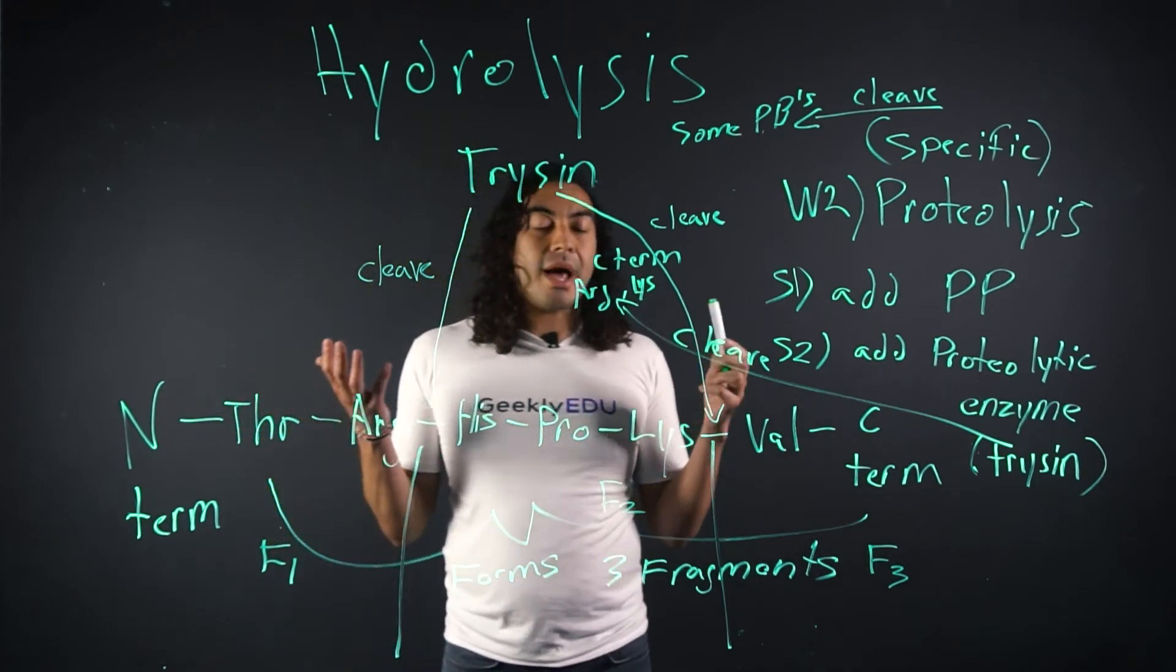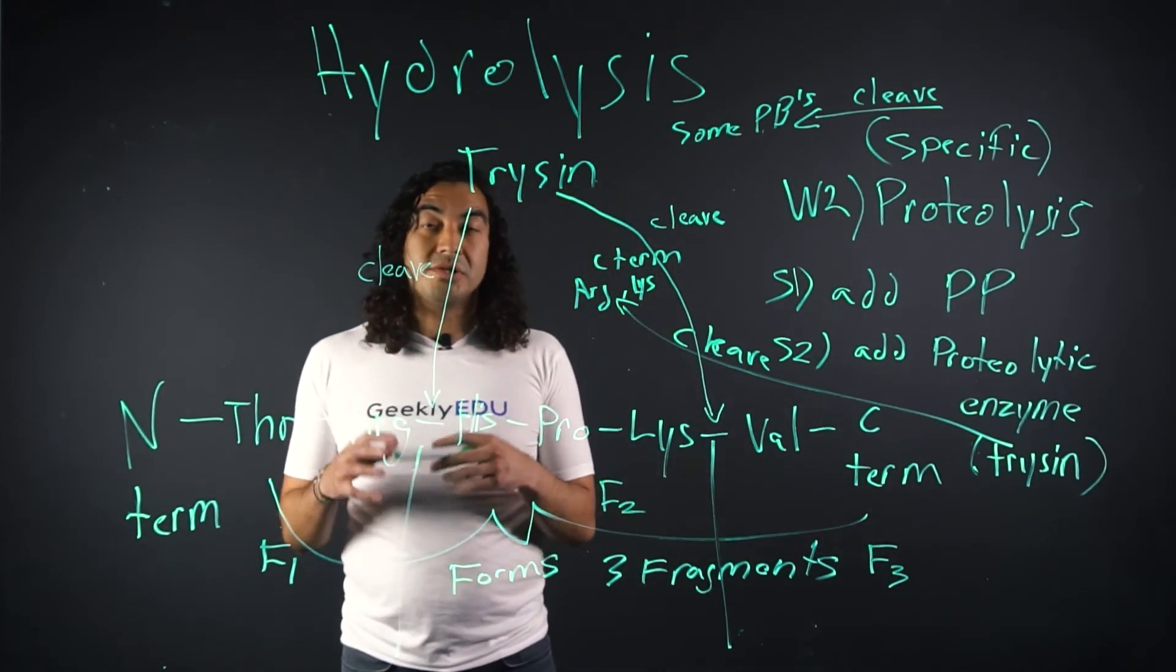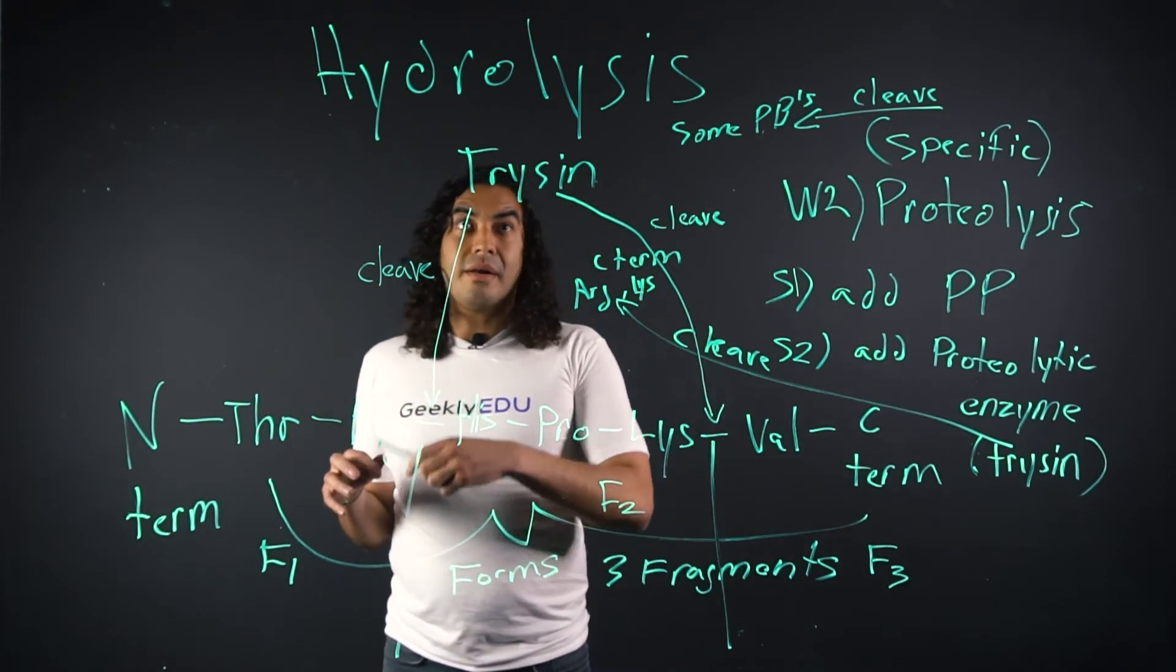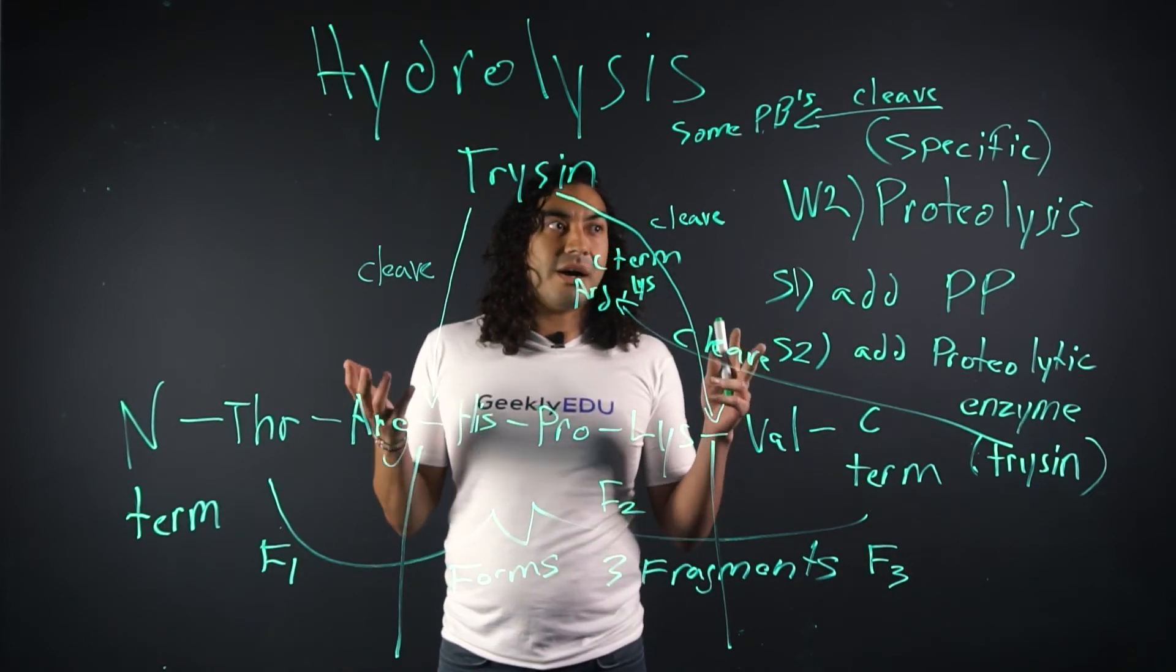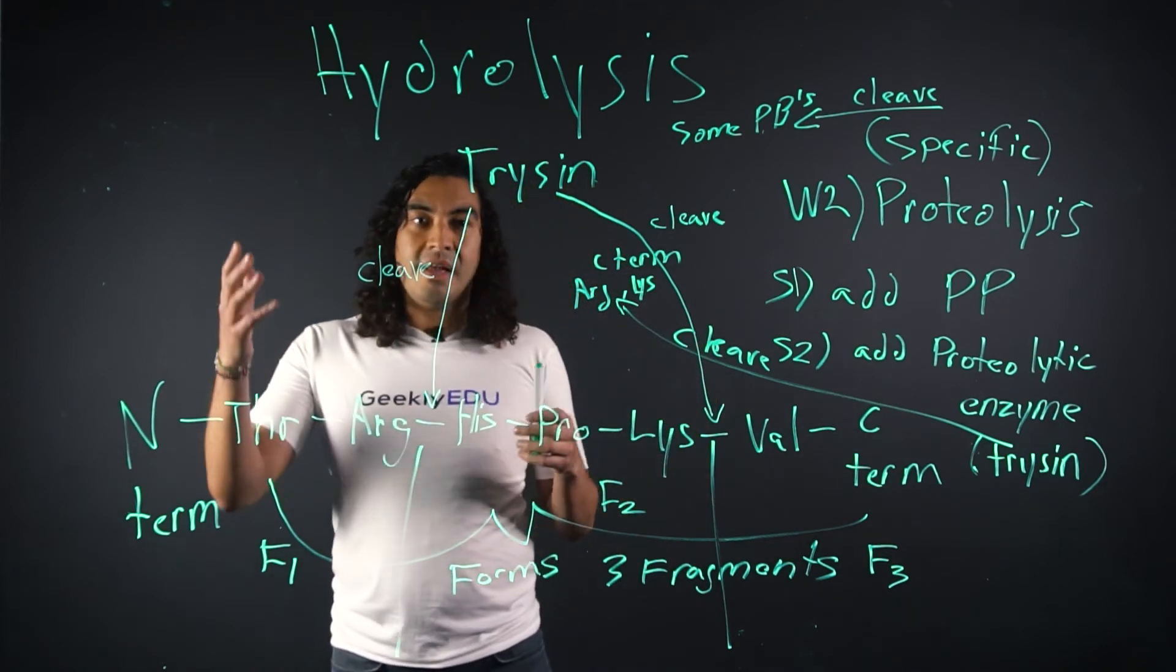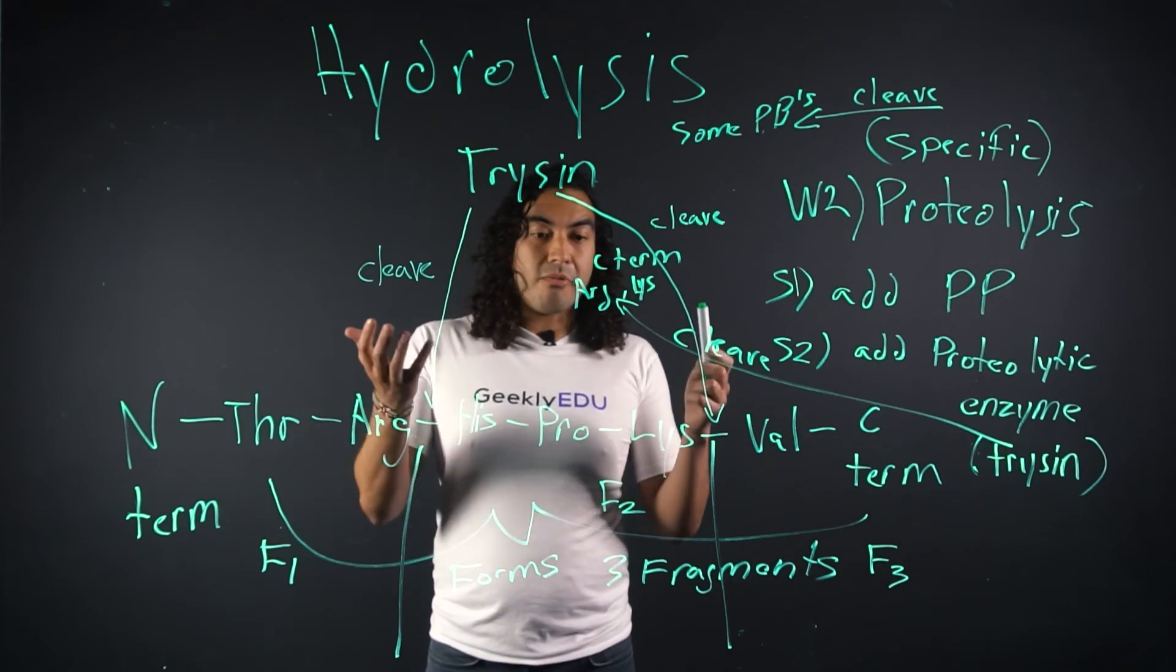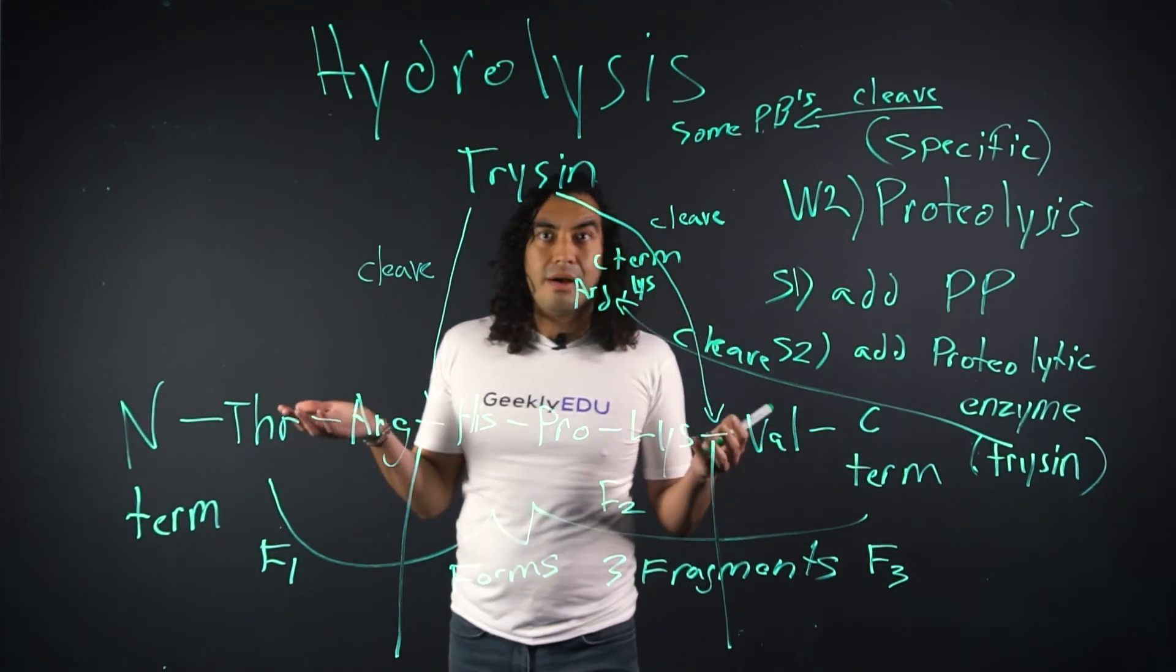So we went over our dipeptide structure. We saw where our peptide bond was formed. We saw where we needed to cleave it. We found out what is called when you're cleaving your peptide bond, hydrolysis. We found, we wrote in the two steps of hydrolysis, or the two ways you can perform hydrolysis, proteolysis and acid hydrolysis. And then we went through the steps and we wrote in exactly how you cleave your peptide bond.